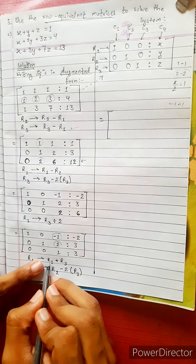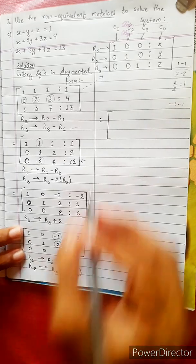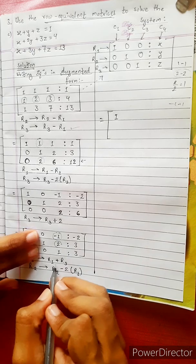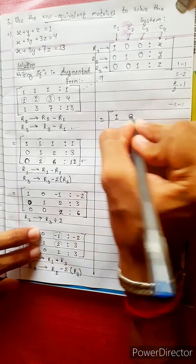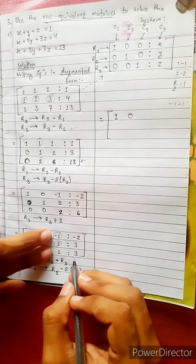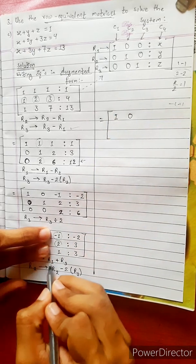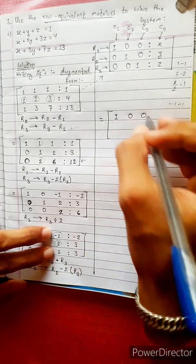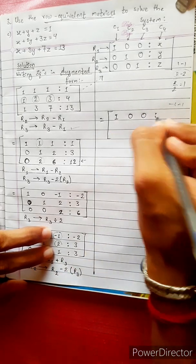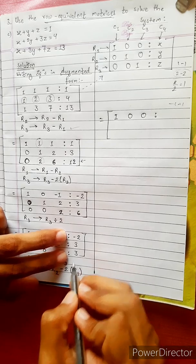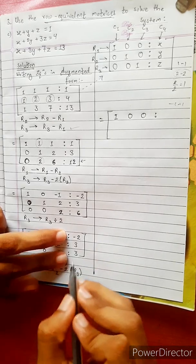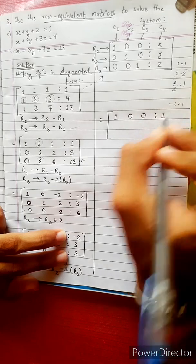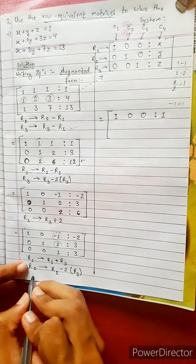1 plus 0 is 1. Then R1 plus R3: 0 plus 0 is 0. Minus 1 plus 1 from R1 plus R3 is 0. 2 minus 2 plus 3 from R1 plus R2 is minus 2 plus 3, which gives 1. R2 result is 0.